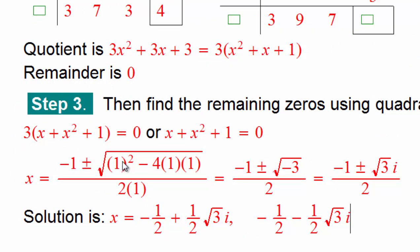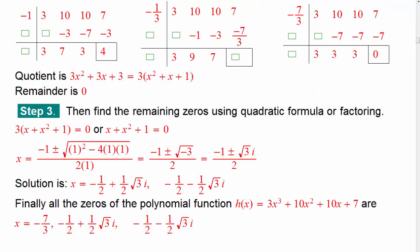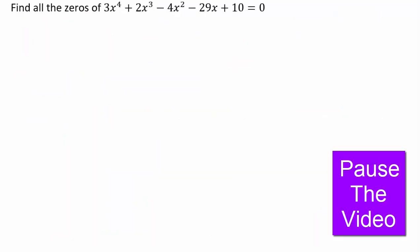Using the quadratic formula — negative b plus or minus square root of b squared minus 4ac over 2a — square root of negative 3 gives you square root 3 times i. So the remaining two roots are non-real complex roots. Always write complex roots in standard form: real part plus imaginary part. So now we have all our solutions: h of x has zeros of negative 7 thirds (from synthetic division), and then negative one half plus one half square root 3 i, and negative one half minus one half square root 3 i. Those are all three zeros of this cubic polynomial. Now go ahead and try the next problem on your own: find all potential rational zeros, do synthetic division, and find all the roots.